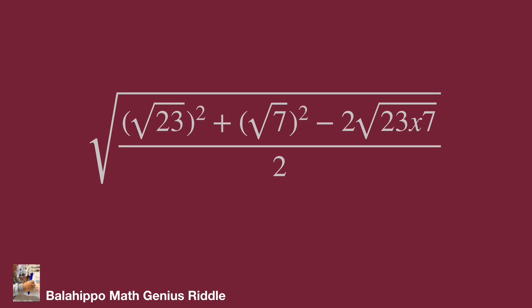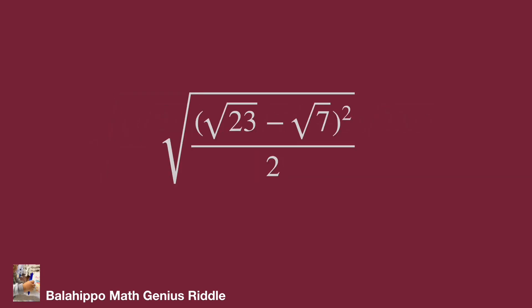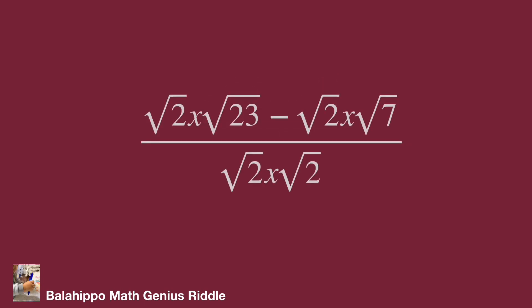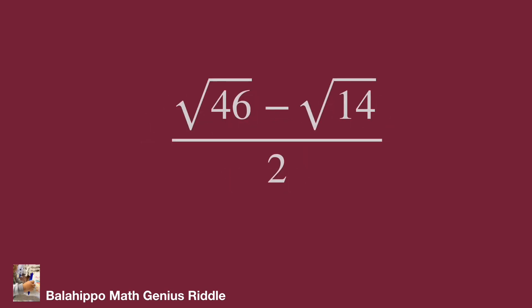This becomes a perfect square: (√23 minus √7) squared. Then the expression changes to the square root of (√23 minus √7)² over 2. Removing the outside square root gives (√23 minus √7) over √2. Multiplying numerator and denominator by √2, we finally get (√46 minus √14) over 2.